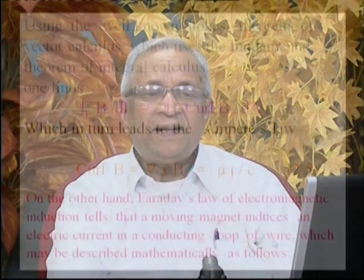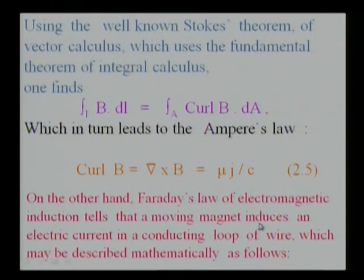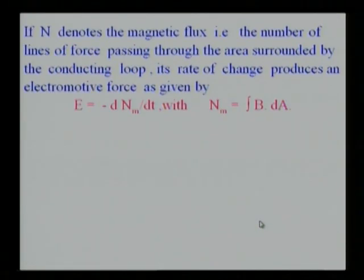Faraday's law of electromagnetic induction tells that a moving magnet induces an electric current in a conducting loop of wire. If n denotes the magnetic flux, the number of lines of force passing through the area surrounded by the conducting loop, its rate of change produces the electromotive force, given by E equals minus d nm by dt, with nm being integral B dot dA.